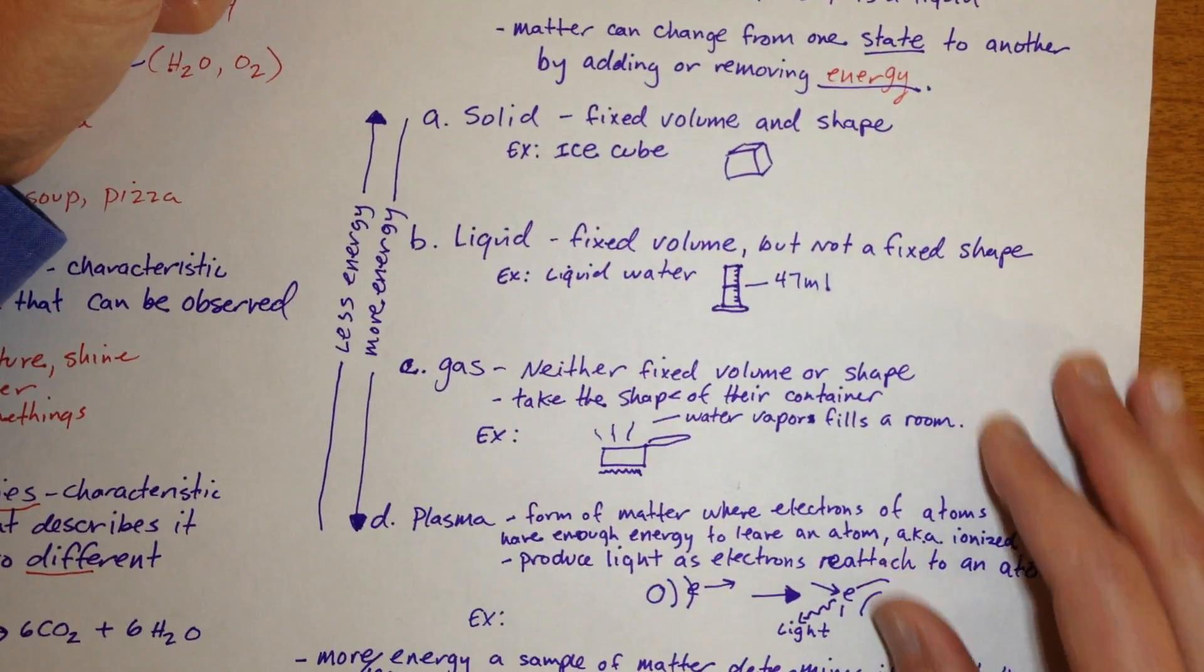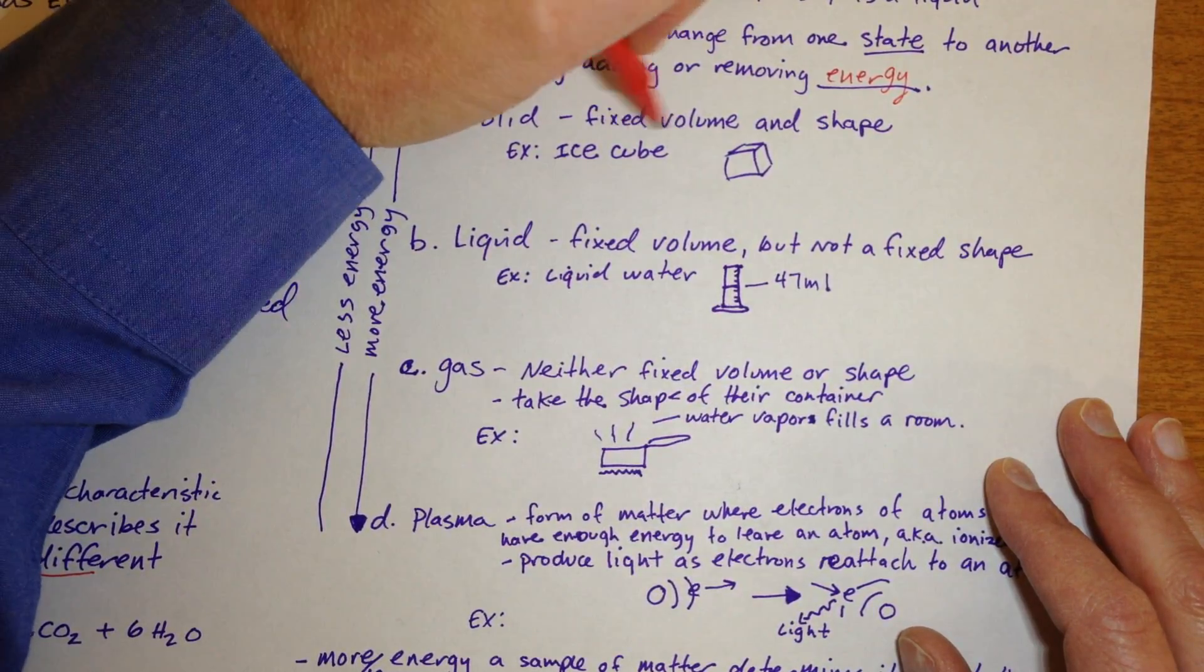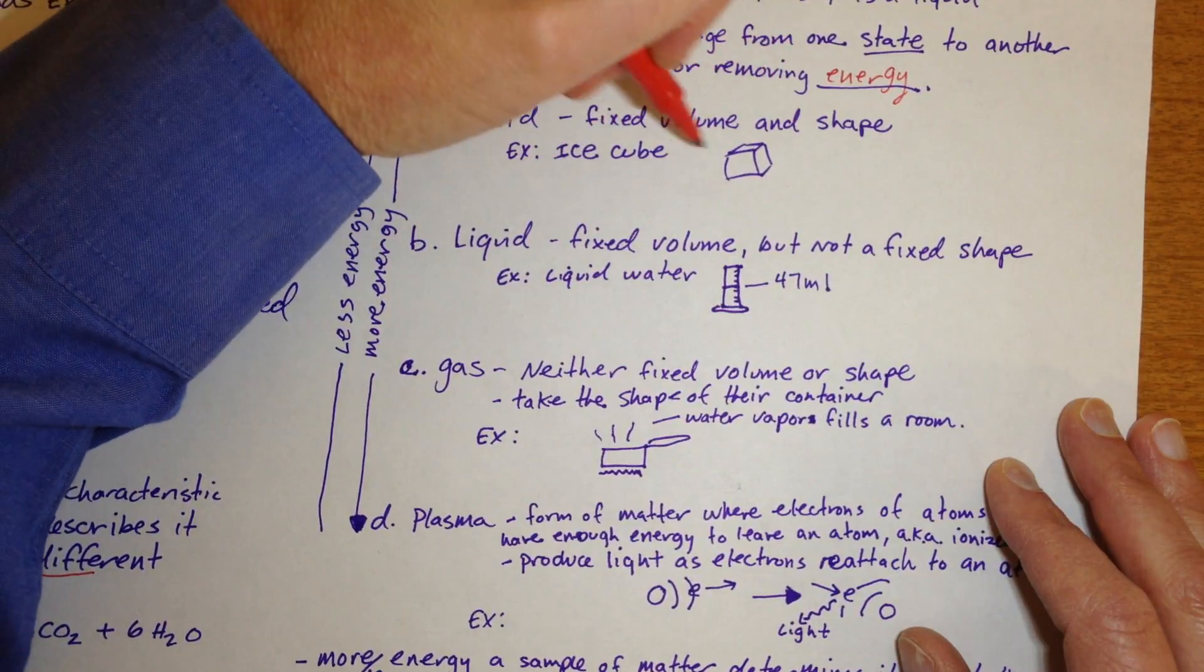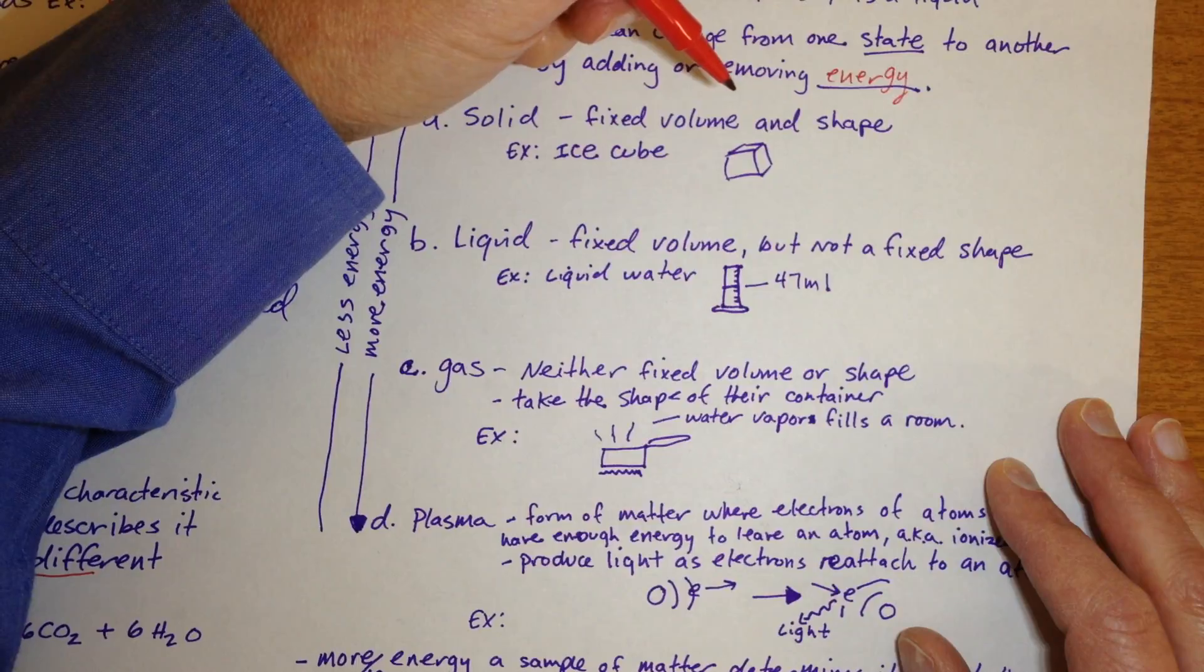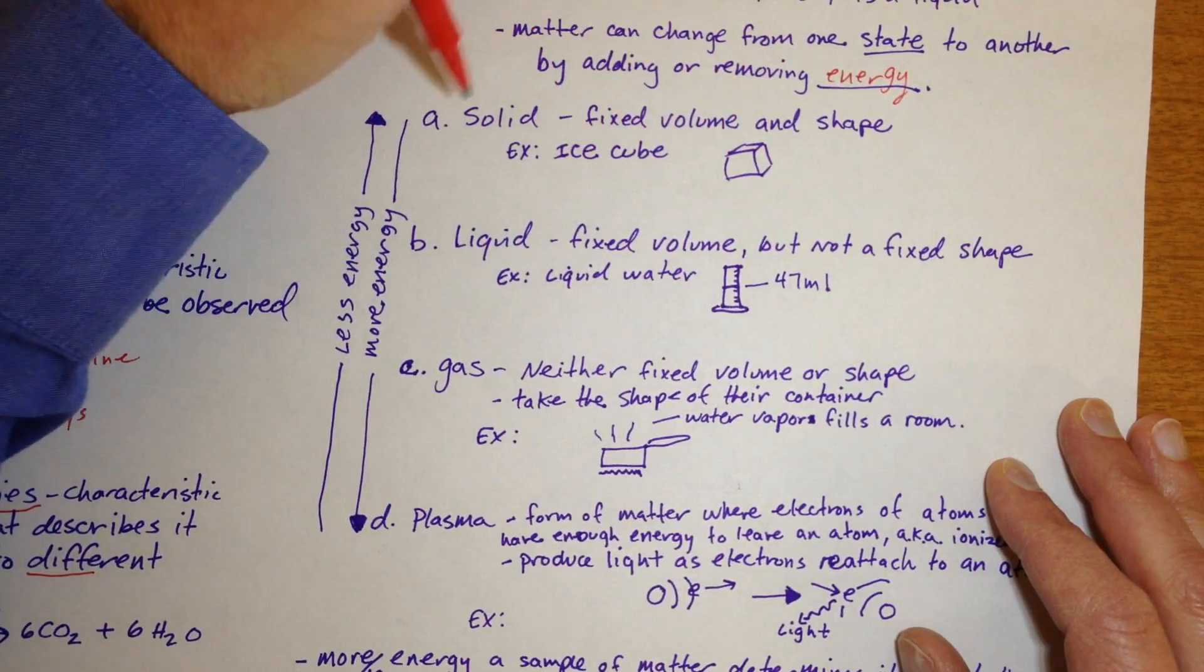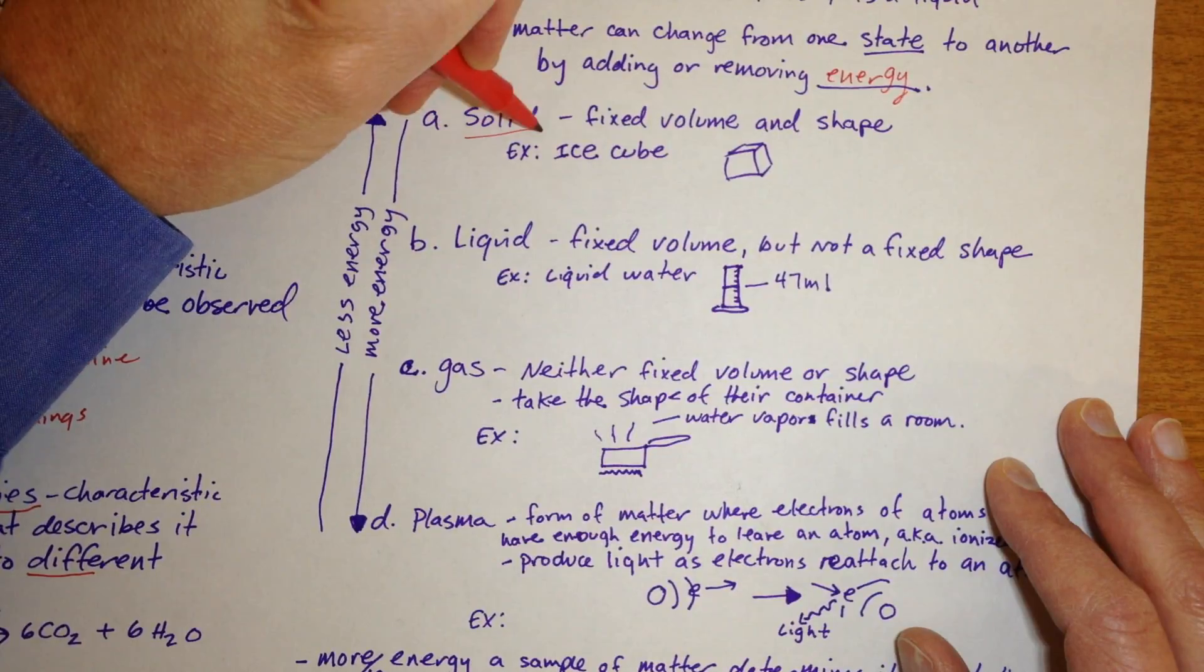Going through the different states of matter real quickly, a solid is defined as it has a fixed volume, a volume that doesn't change, and a shape that doesn't change. If you think of an ice cube, you could actually measure length times width times height, and its shape doesn't change as long as it doesn't gain any energy and start to melt. So that would be described as a solid.